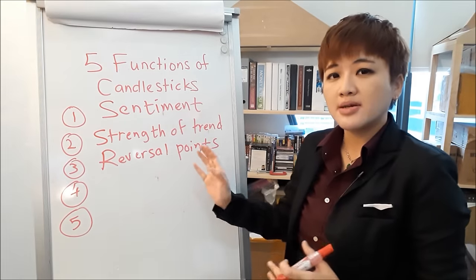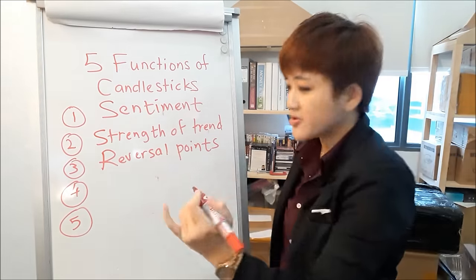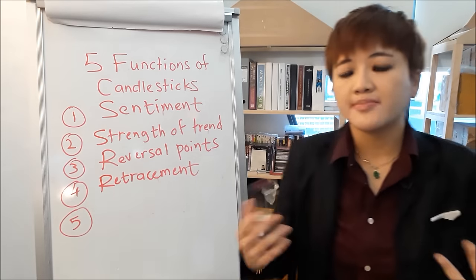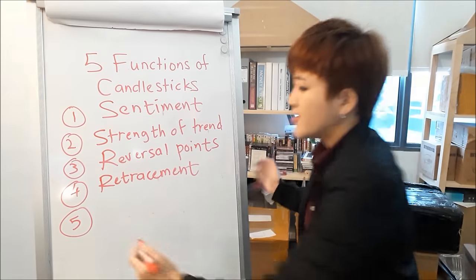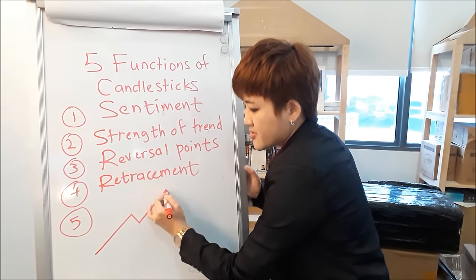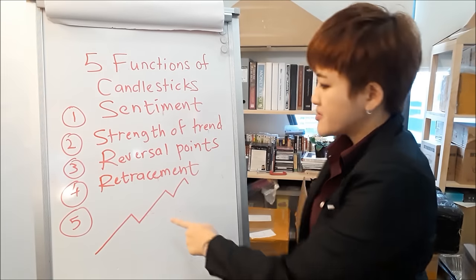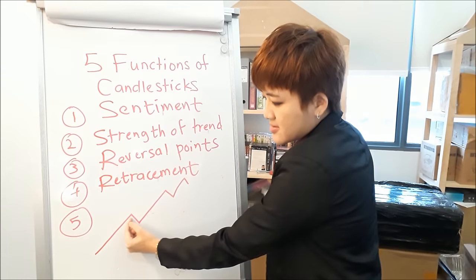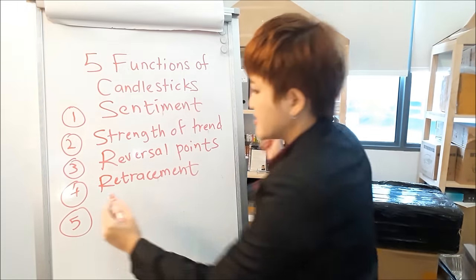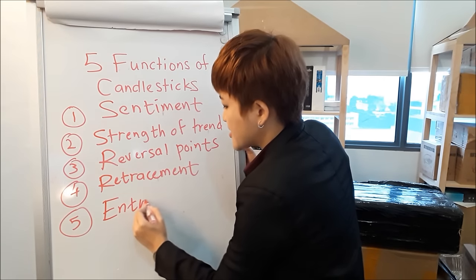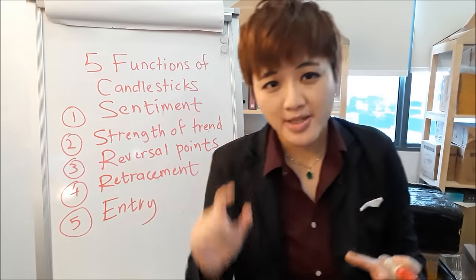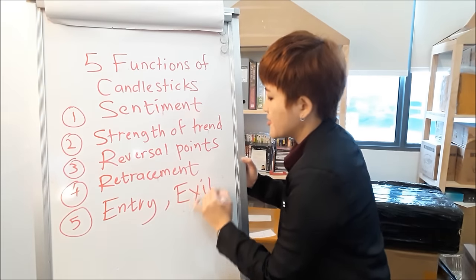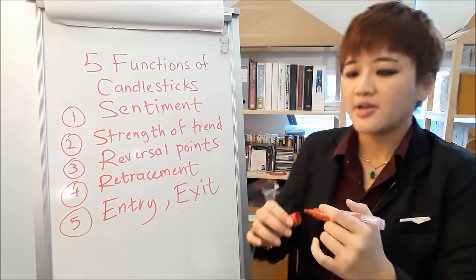For reversal candlestick patterns, it tells you potential reversal points — meaning the end of the entire trend. Candlesticks can also tell you where a retracement is going to take place, because markets go up, retrace, go up, retrace. The fifth function is it can potentially tell you a good place and time to enter a trade.